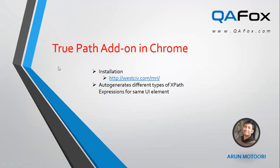To overcome that problem, a good number of alternatives came to replace Firebug and FirePath, and TruePath add-on is one of them. TruePath add-on will not completely replace Firebug and FirePath functionalities, but it can do a part of what they did — that is, auto-generating different types of XPath expressions. Firebug and FirePath used to auto-generate XPath, CSS, validate XPath, validate CSS, and more, but TruePath covers the XPath auto-generation part.